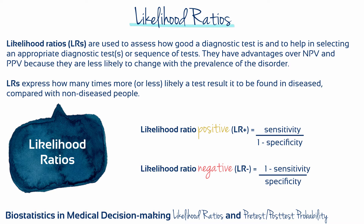Likelihood ratios are an alternative way of describing the performance of a diagnostic test. They summarize the same kind of information as sensitivity and specificity and can be used to calculate the probability of disease after a positive or negative test result. Essentially, they combine information about sensitivity and specificity into a single clinically useful measure.